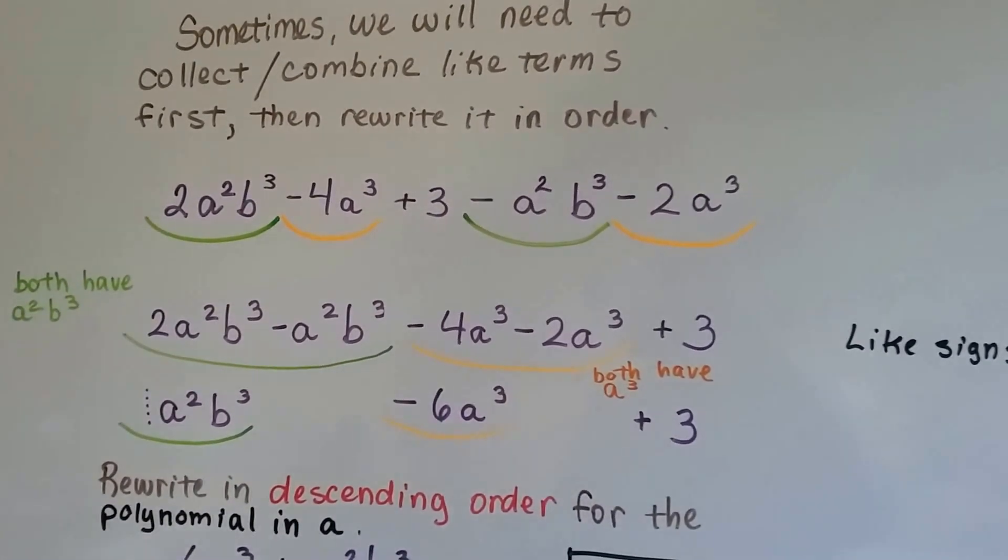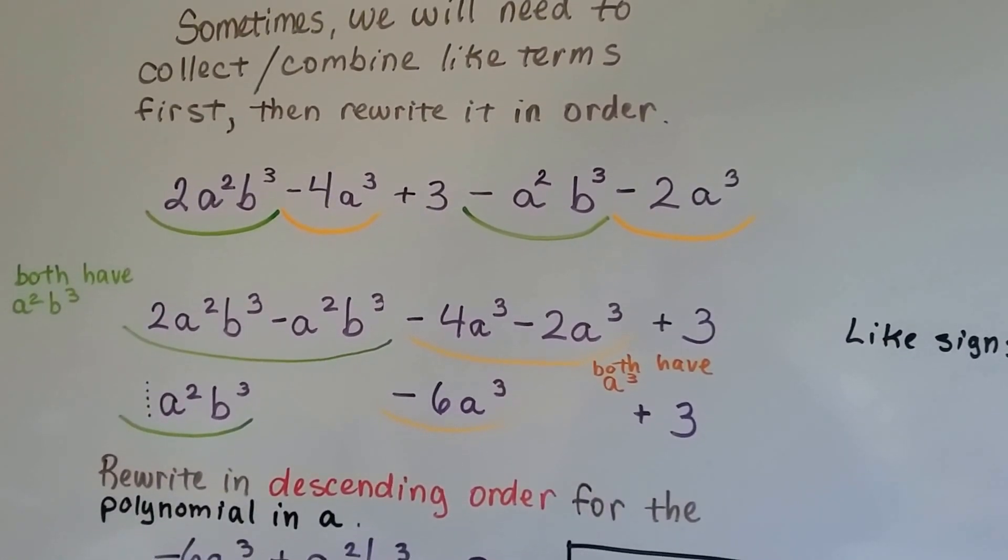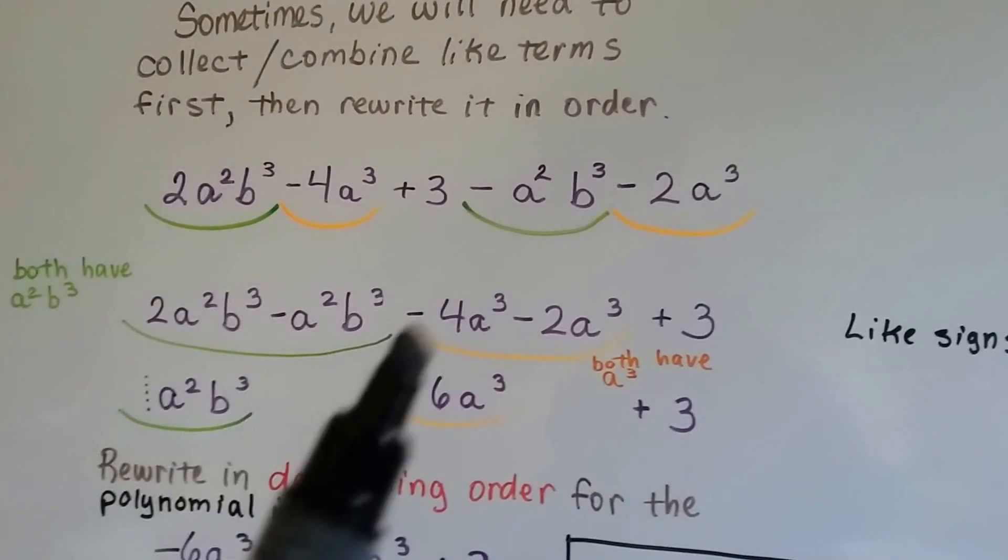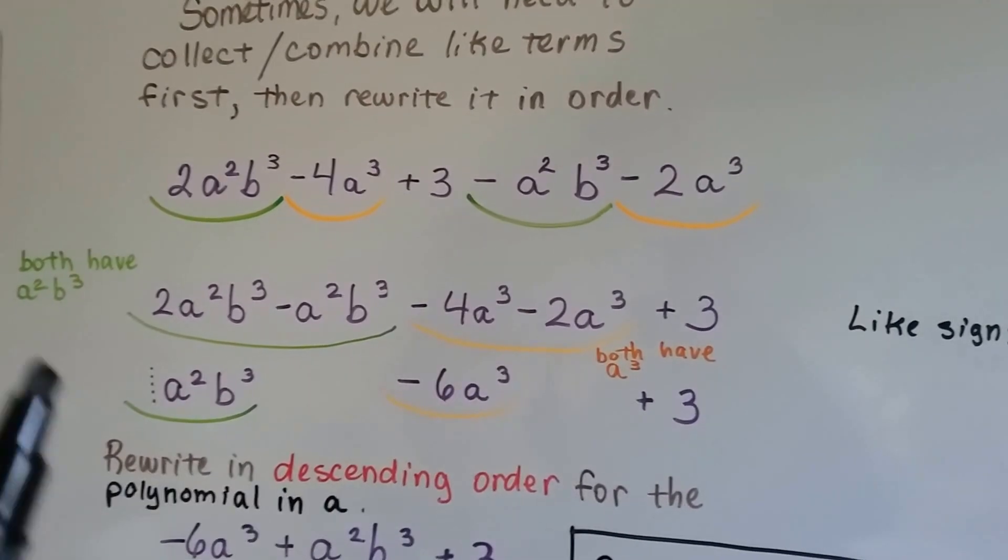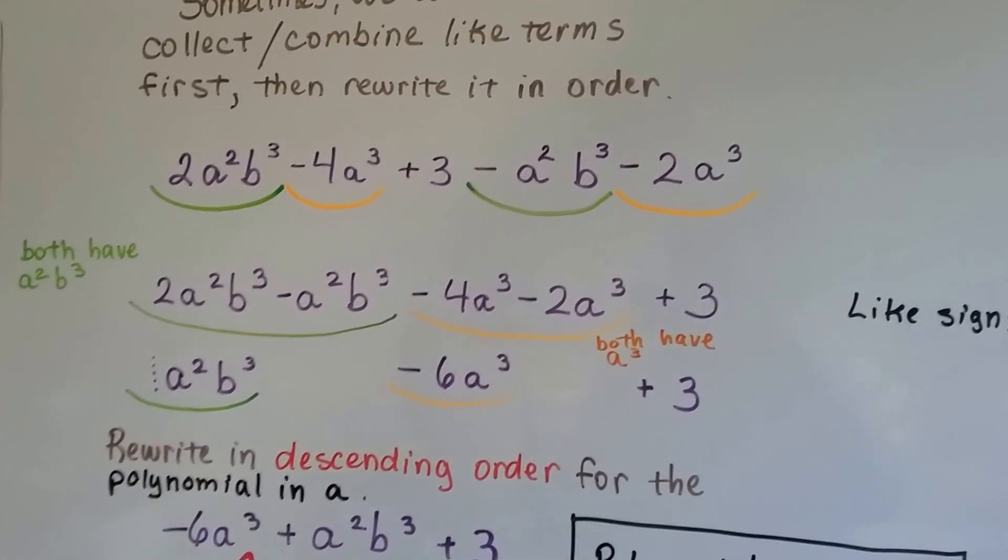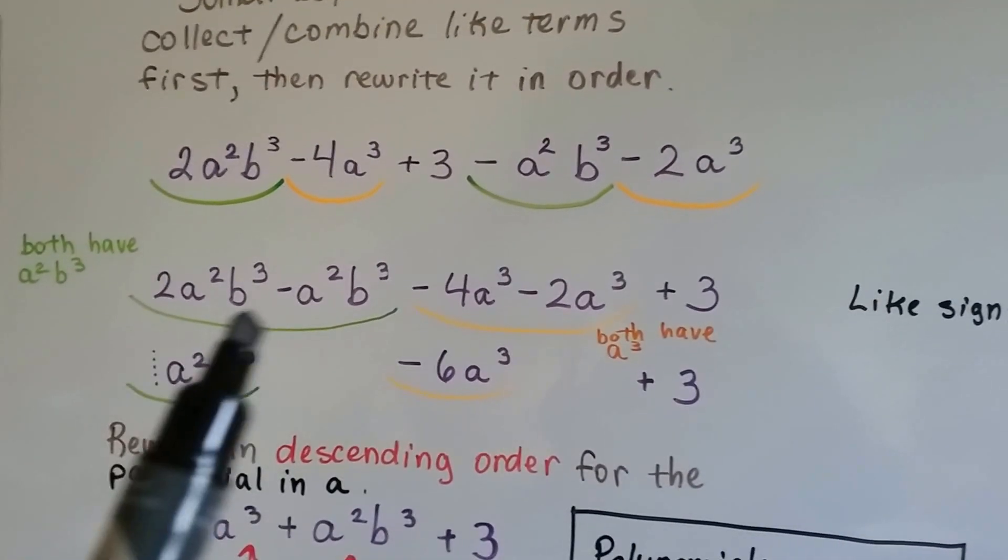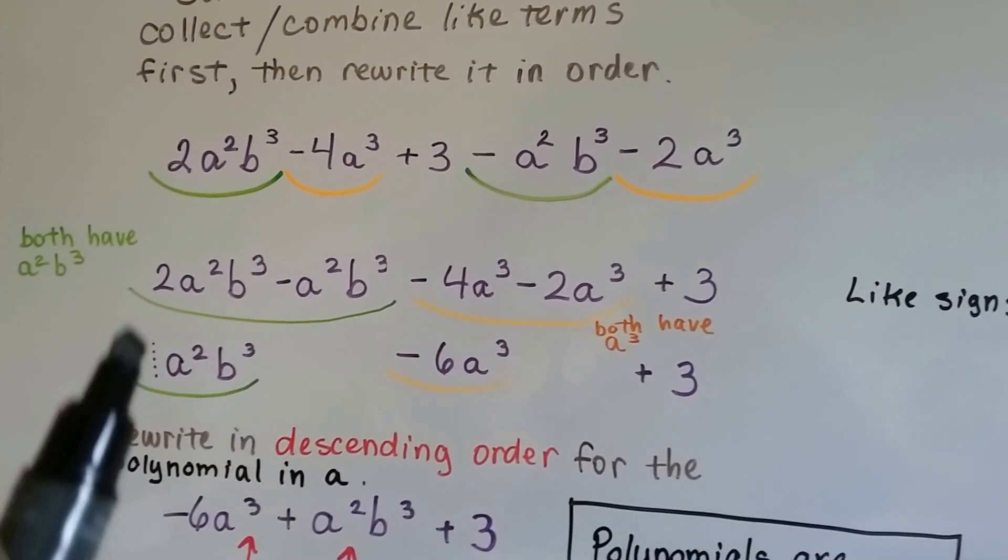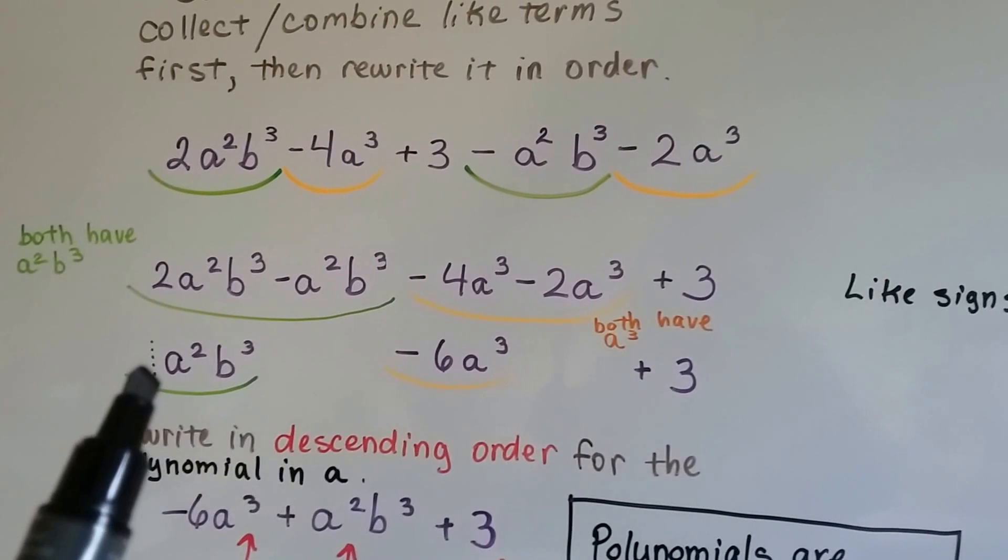So when we combine the 2a squared b to the 3rd power and this negative a squared b to the 3rd power, they're like terms, we get our friend the invisible 1, because 2 take away this is going to be one of them.